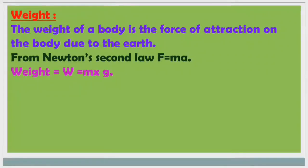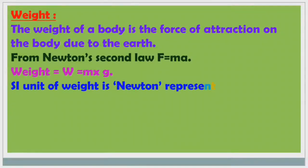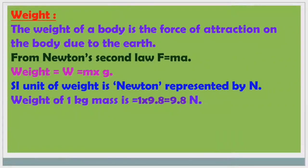So the formula for weight is W equals MG. The SI unit of weight is Newton, represented by capital N, named after Sir Isaac Newton. The weight of a 1 kilogram mass is 1 × 9.8 = 9.8 Newtons, and the weight of a 2 kilogram mass is 2 × 9.8 = 19.6 Newtons.